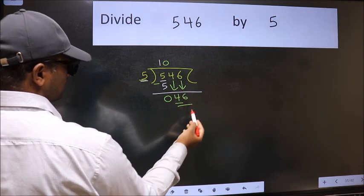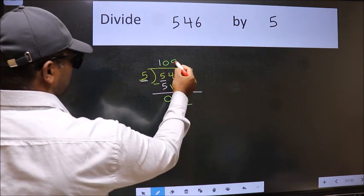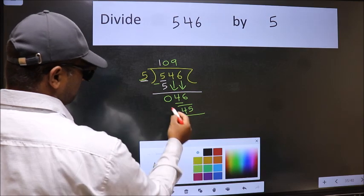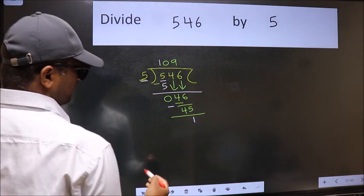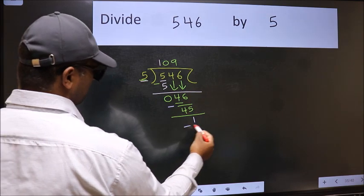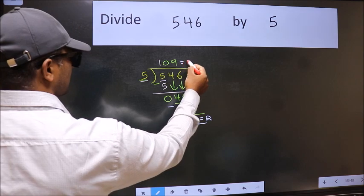Now 46. A number close to 46 in five table is 5 nines 45. Now we should subtract, we get 1. No more numbers to bring down, so we stop here. This is our remainder and this is our quotient.